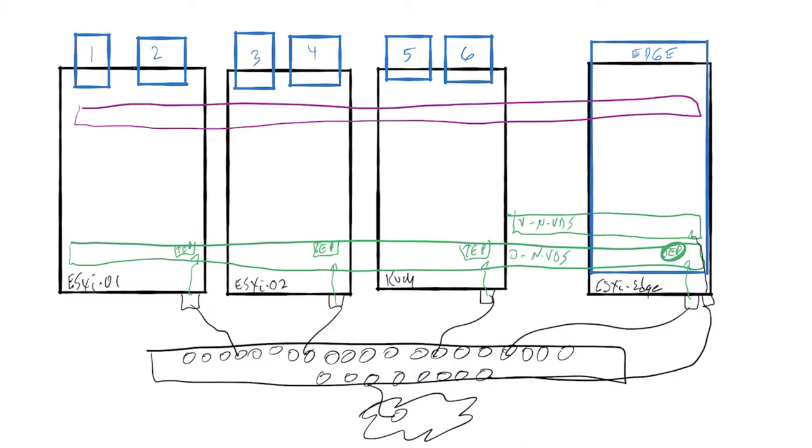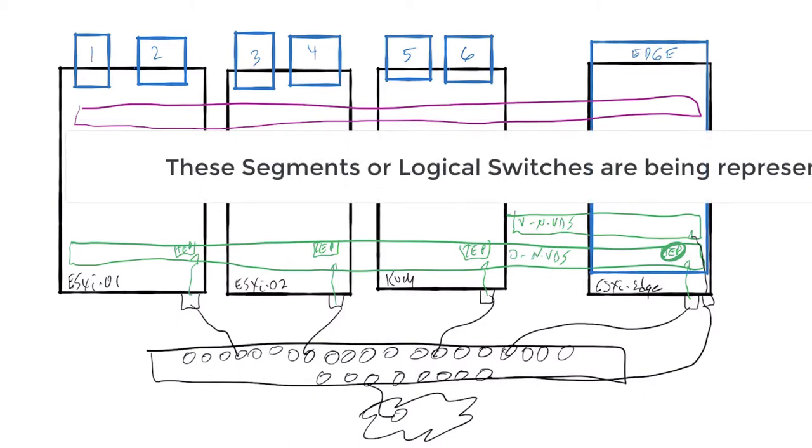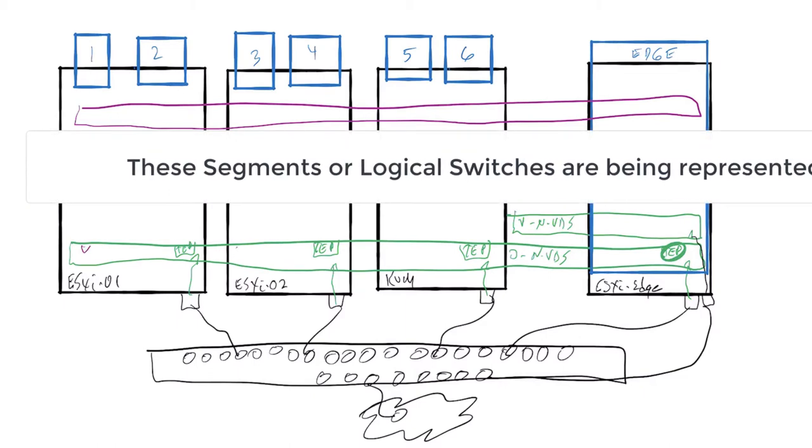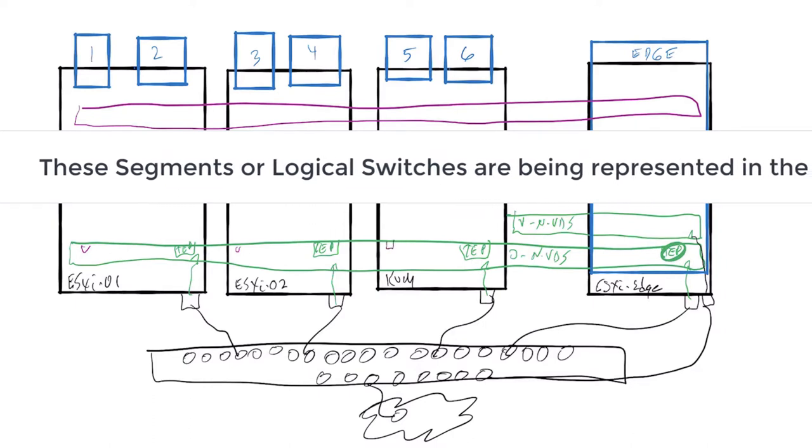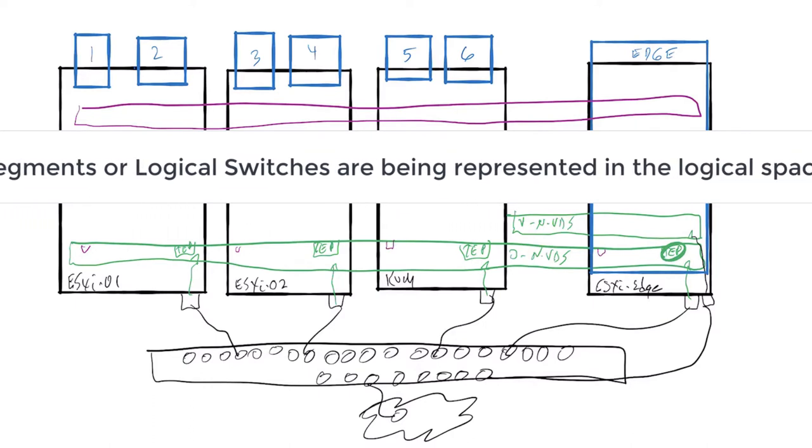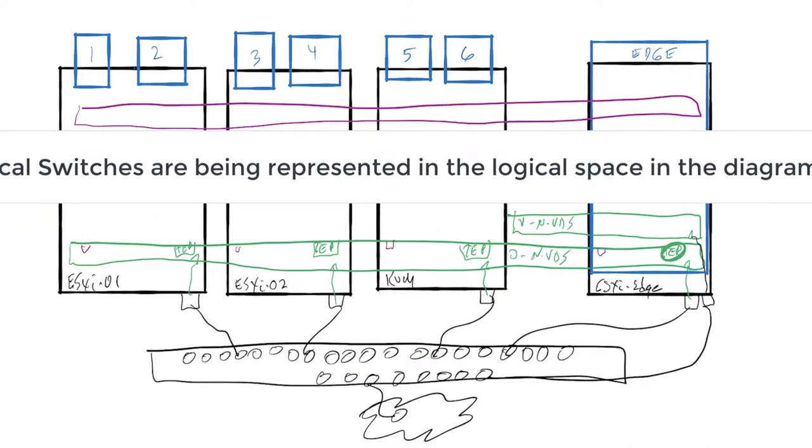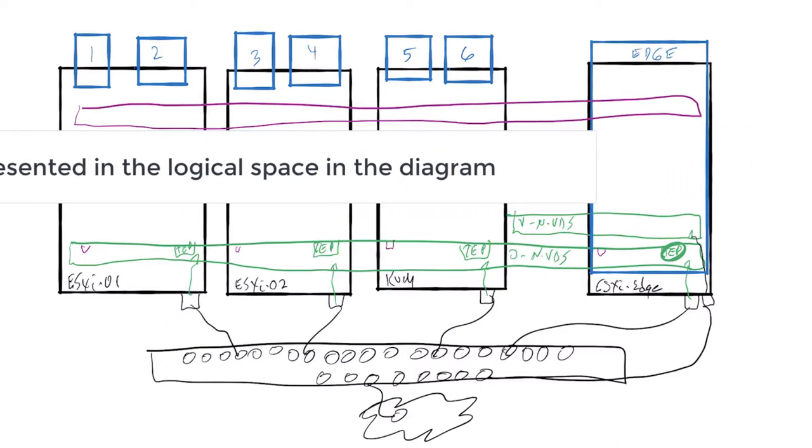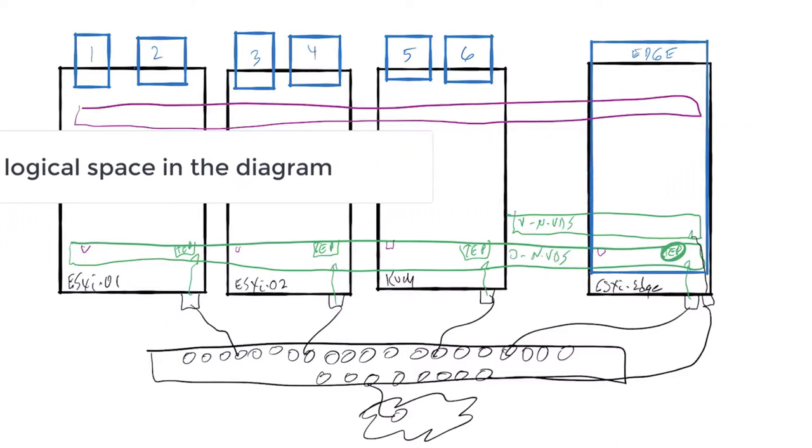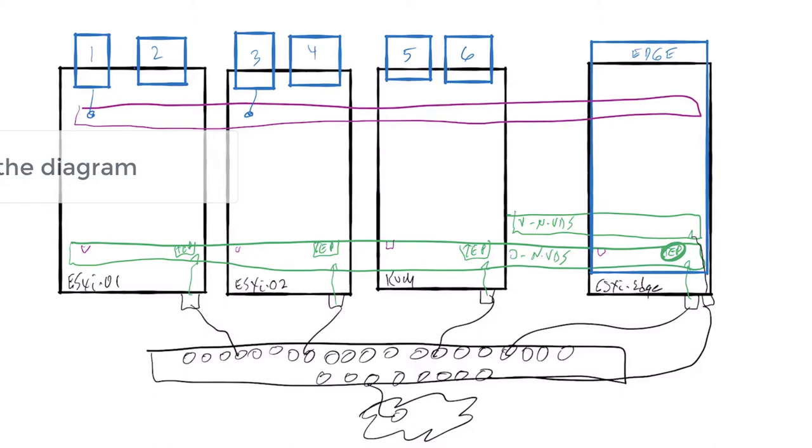Now, when I do that, I'm actually creating a port group-like object that exists on the NVDS. Now, if I attach the VMs to that using the vCenter, it's quite easy, simple process of just going to the VM and adjusting the network.